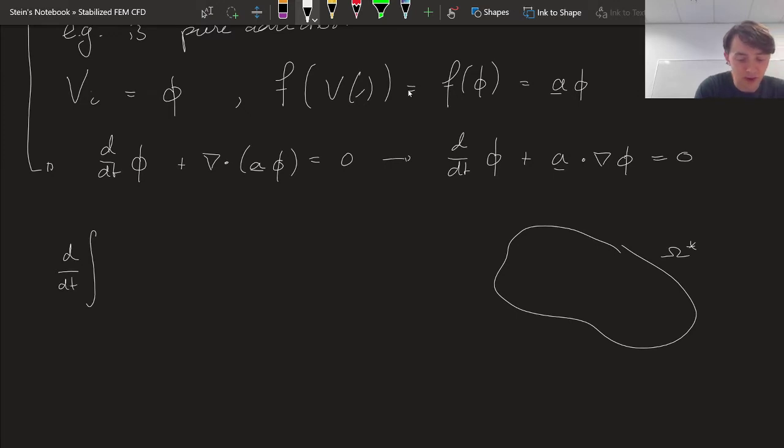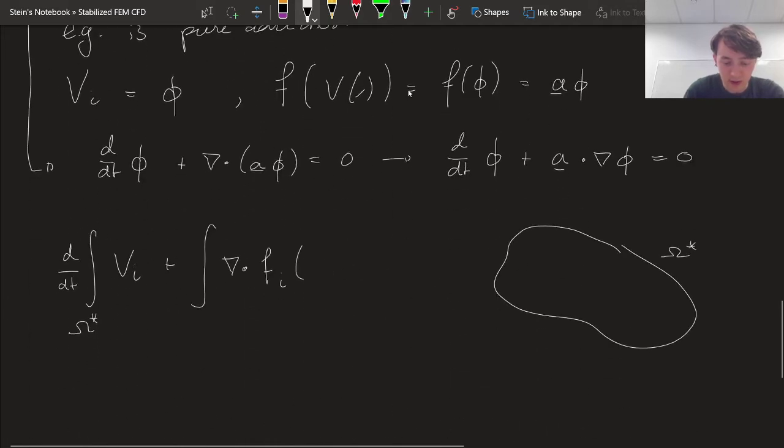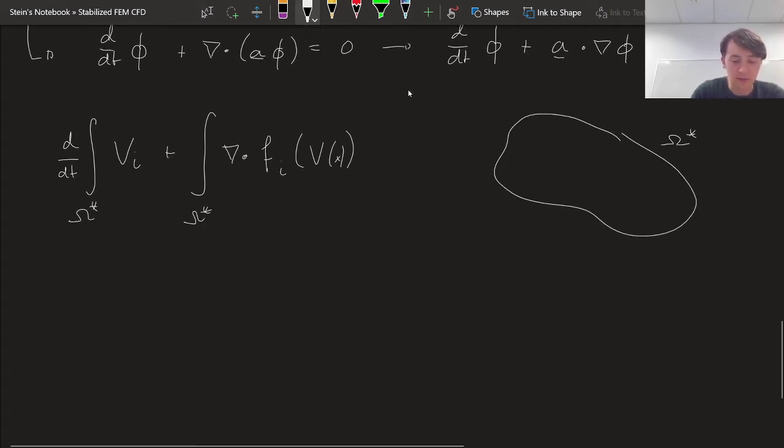integration and differentiation. So we get d/dt of v_i, the i-th state, on omega star plus the divergence of the flux of the states at position x, omega star. This is screaming for the use of the divergence theorem,